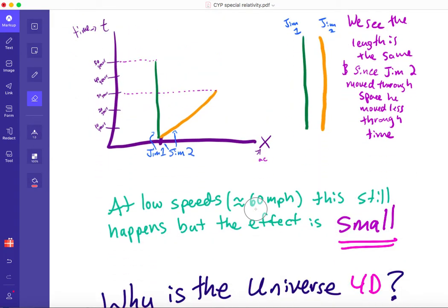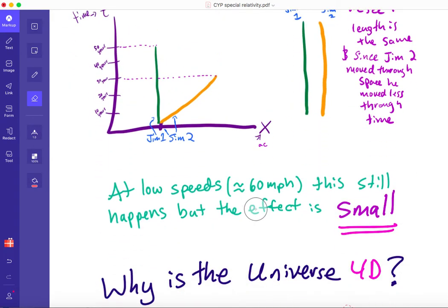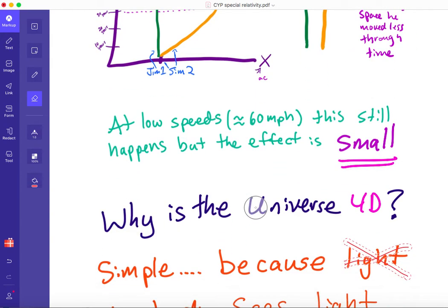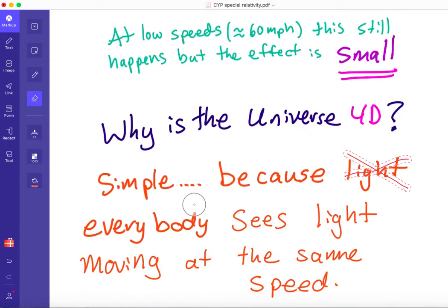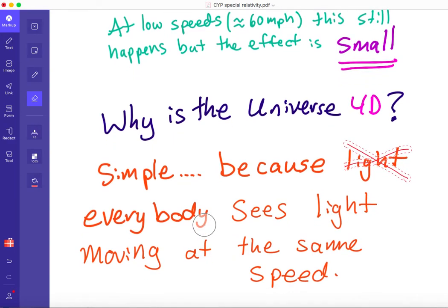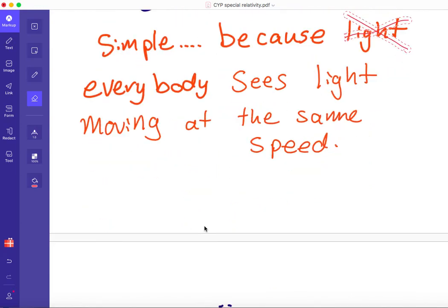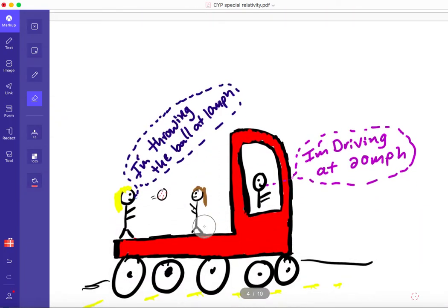So now you can ask, okay, we explain why time goes slower because the universe is four-dimensional. But then why is the universe four-dimensional? We have to have some grounding. Where did this idea come from? This idea came from an experiment that was done that shows that everyone sees the light moving at the same speed. So we should understand what this means.